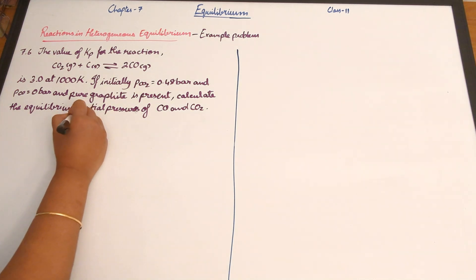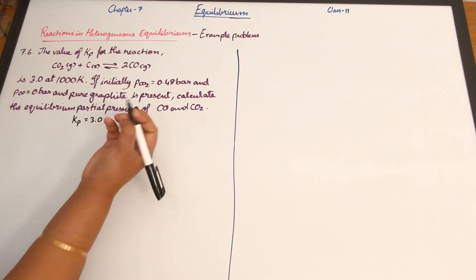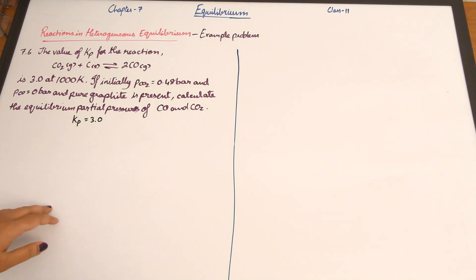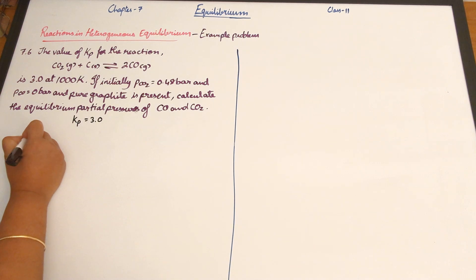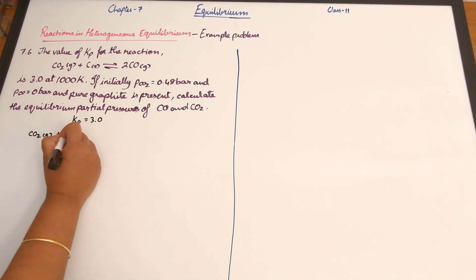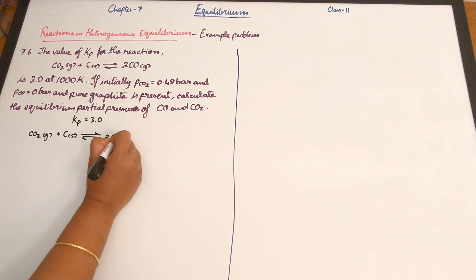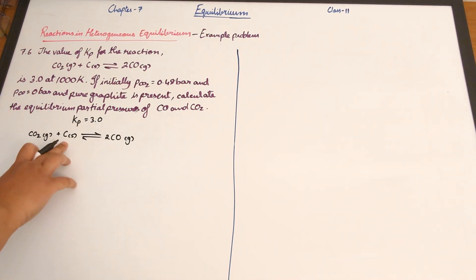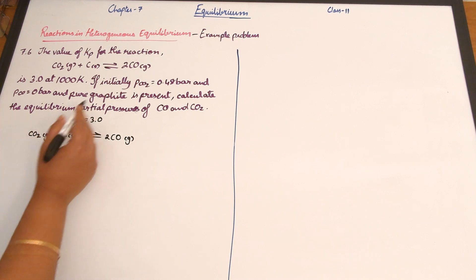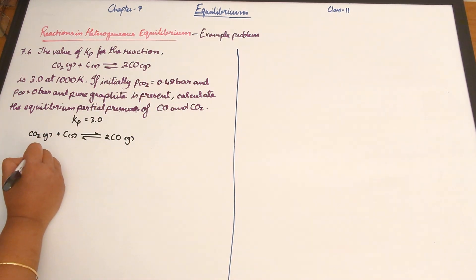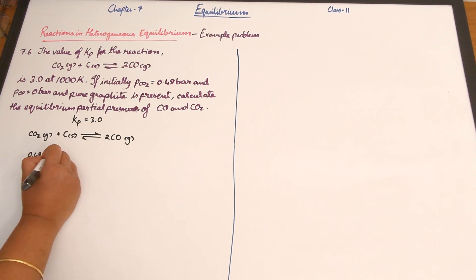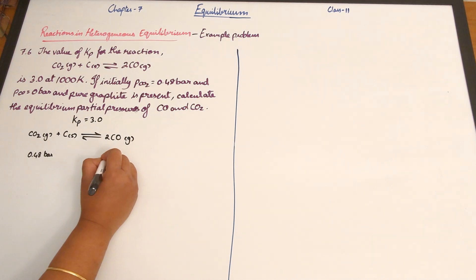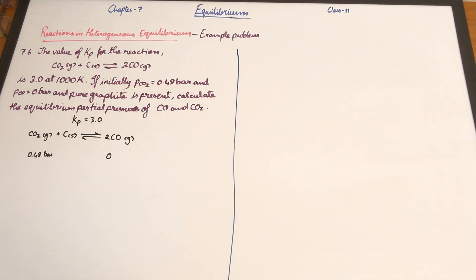We've been given Kp equals 3.0, and this question is similar to question number 7.4 discussed two videos ago. The equation is CO2 plus C gives rise to 2CO. We don't consider graphite since its concentration is constant. Initially, the partial pressure of CO2 is 0.48 bar and the partial pressure of carbon monoxide is 0 bar.